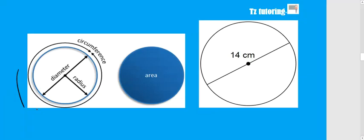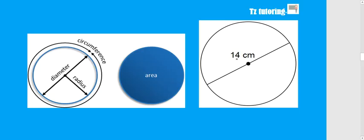The distance around the circle is not called a parameter — it's called the circumference. The space inside the circle is the area. Important to note is the relationship between the radius and the diameter. The distance from one end of the circle to the other end is your diameter.